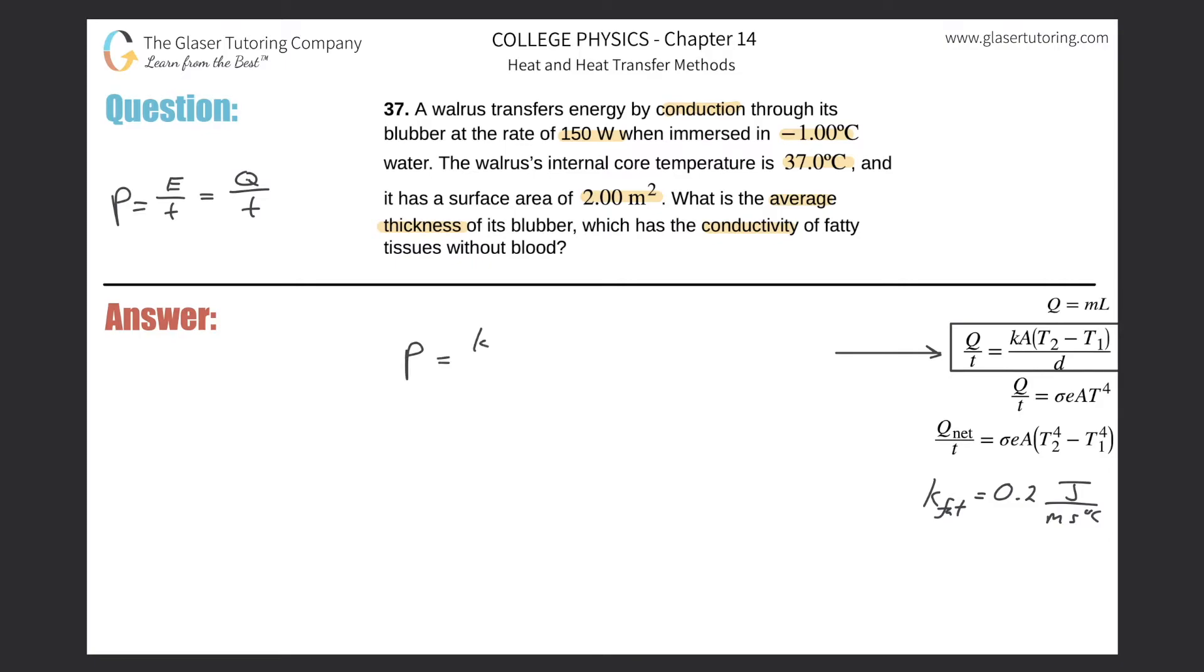That's equal to the thermal conductivity constant multiplied by the surface area over which the object is conducting heat through, multiplied by the temperature difference between the two surfaces, divided by the thickness of that particular object.